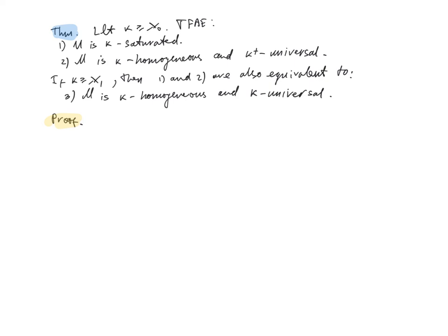Proof: We proved earlier that if a model is κ-saturated then it is κ-homogeneous, and in the previous lemma we proved that κ-saturated implies κ⁺-universal. So this shows that (1) implies (2) by an earlier result together with the lemma just proved. The implication (2) implies (3) is obvious because clearly κ⁺-universality implies κ-universality. So it remains to show that (2) implies (1), and if κ is uncountable, then (3) also implies (1).